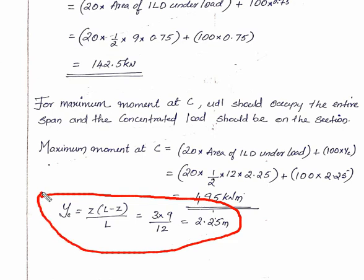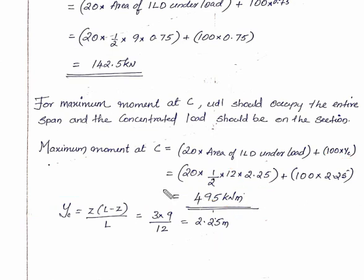Calculate ordinate value ȳA = z(L-z)/L = 3×9/12 = 2.25m. Maximum moment at C equals 100 times ordinate value plus 20 times 1/2 times 12 times 2.25, giving 182.5 kN·m as the maximum moment at C.